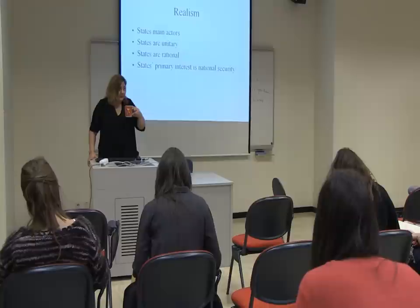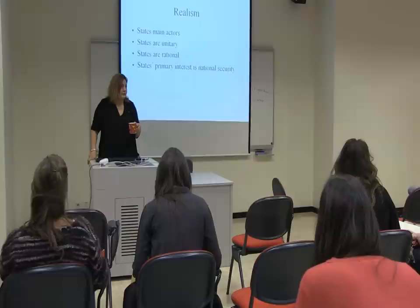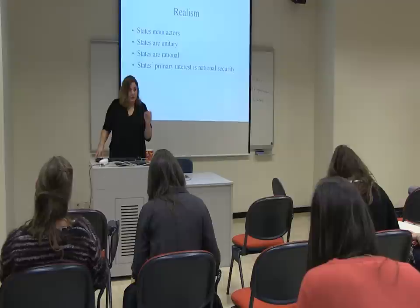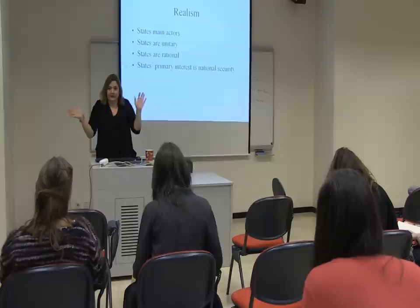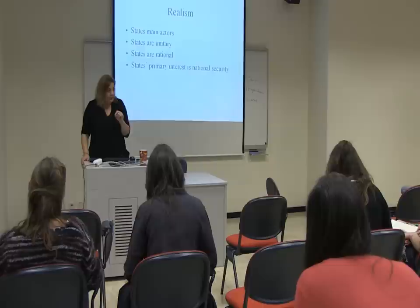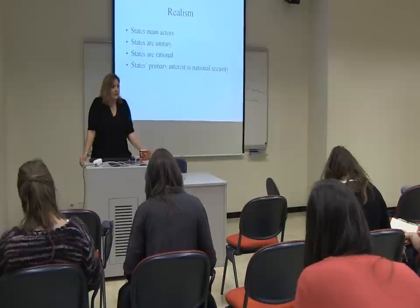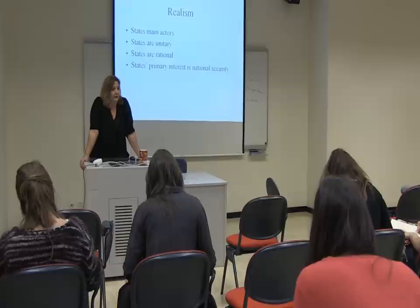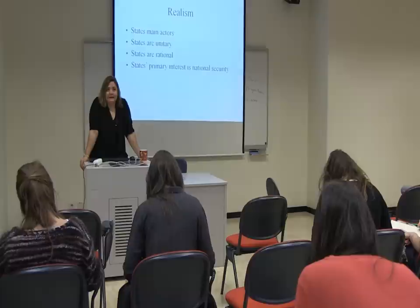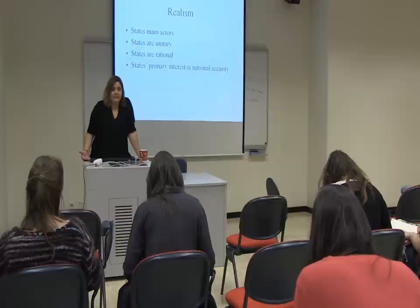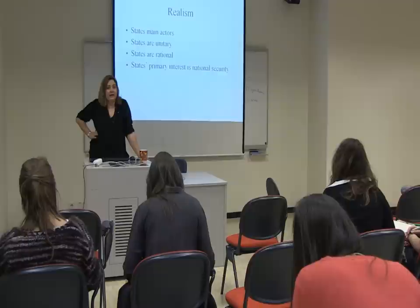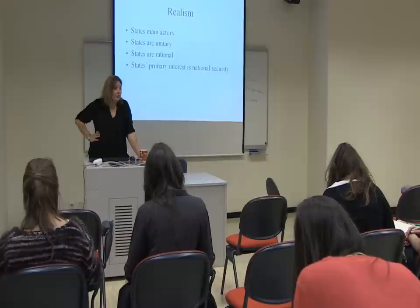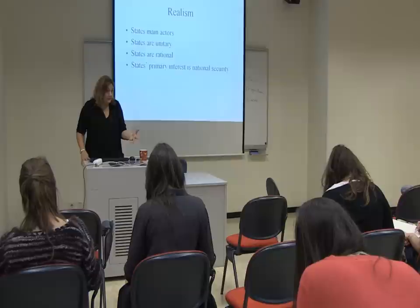A rational actor chooses the optimal choice — the one with the highest level of benefits and the minimum amount of costs. That's utility maximization. How do you calculate utility? You calculate the potential costs and benefits of each possible alternative and choose the one with the highest benefits and lowest costs. That would be your optimum choice — you optimize.